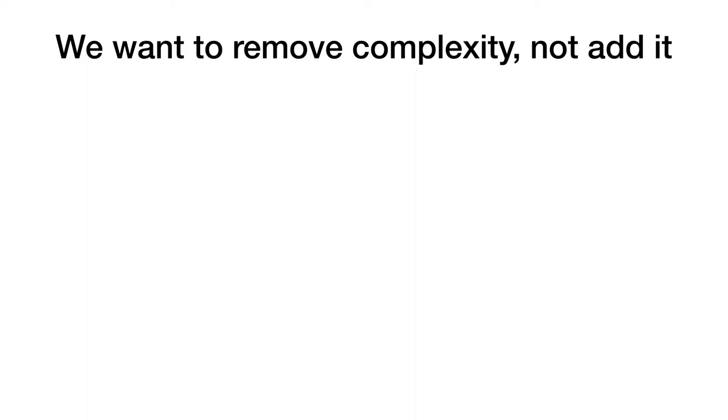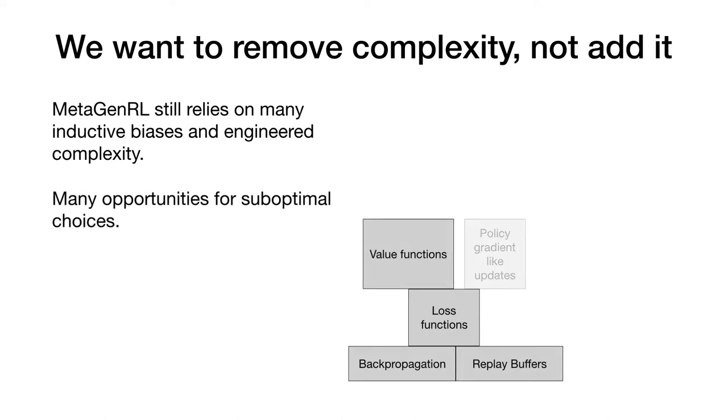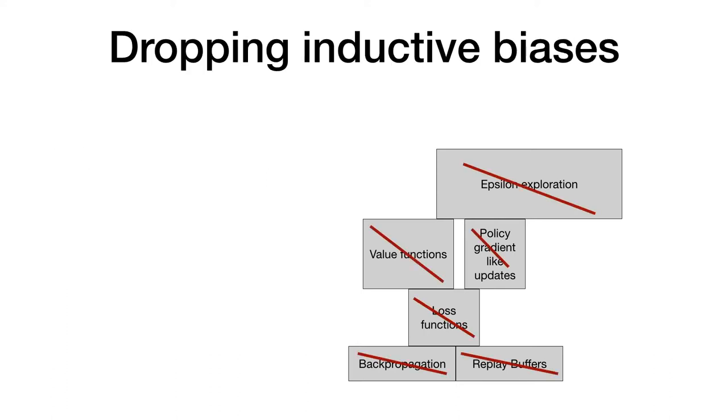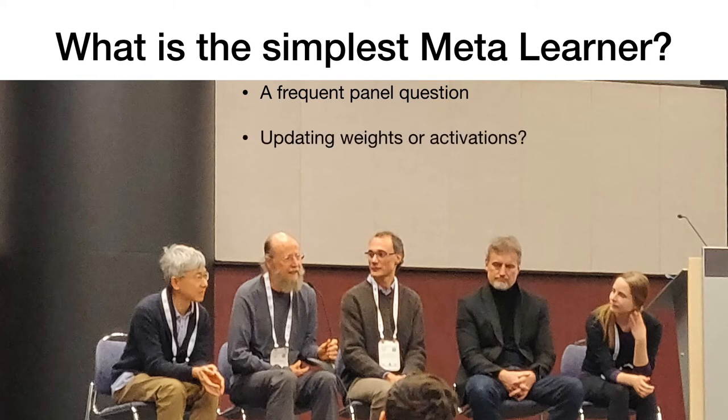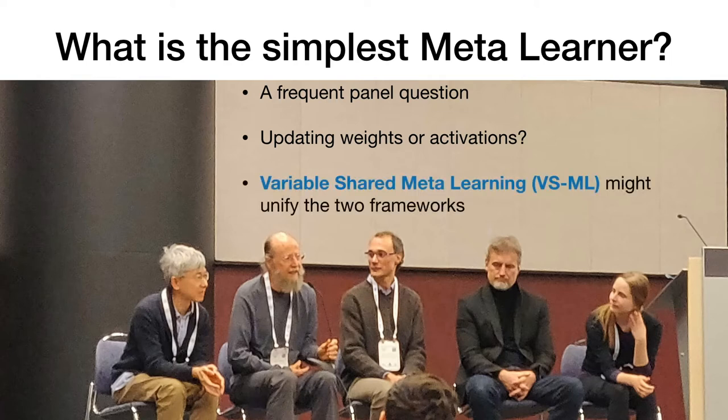But perhaps now you're thinking, wasn't the original goal of general meta-learning to remove complexity instead of adding it? While we were able to meta-learn generalizing learning algorithms, we still relied on many inductive biases and human engineered complexity. And when stacking these building blocks, there are many opportunities for sub-optimal choices. In meta-general, there is backpropagation, replay buffers, loss functions, value functions, etc. Which one of those are really needed though, and which ones can we discard? This question has been debated in panels frequently. Continual learning and meta-learning workshops likewise. One common position is that updating weights akin to fast weights or learned learning rules is the most straightforward approach. Others hold against and argue that meta-learning and activations is the simplest thing to do. Can we unify these seemingly different frameworks? My new work on variable shared meta-learning might be able to.